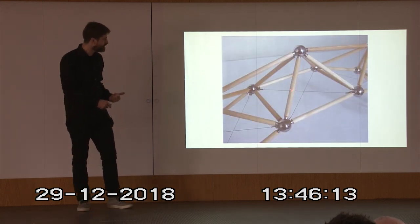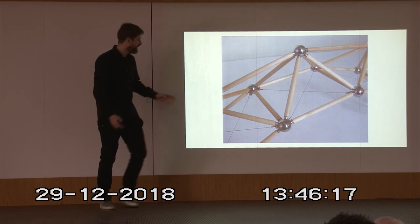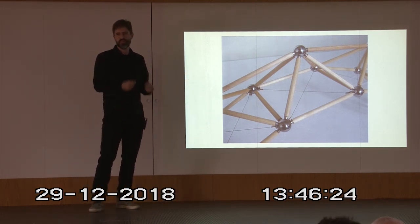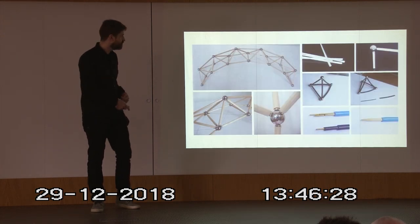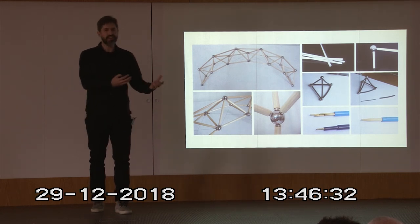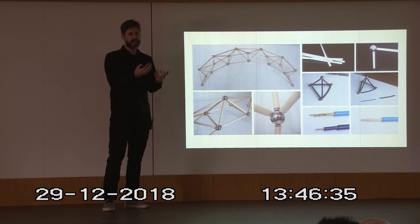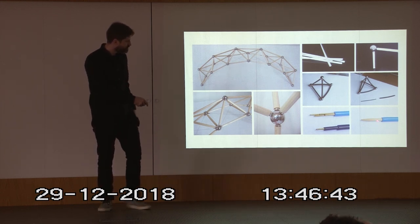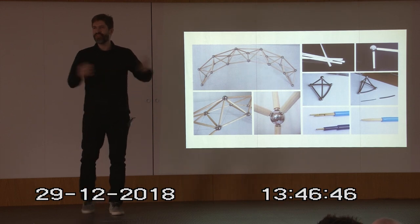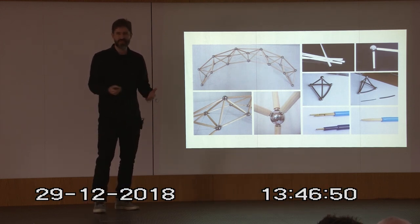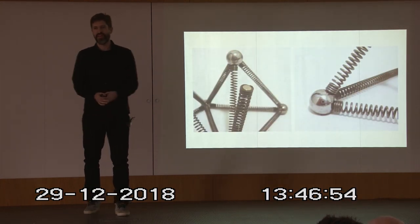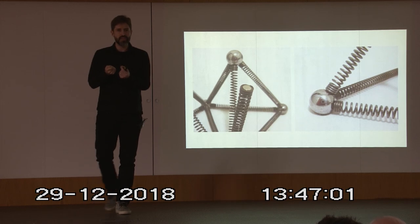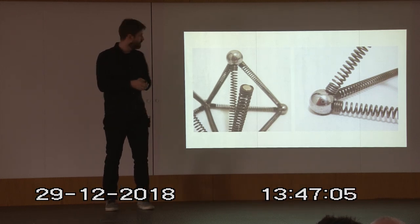I kept curious about the structural behavior — I wanted to see what was happening in each bar of the structure, but with wood sticks I could not see the deformations. So I started to build with different materials trying to find something that would let me visualize everything. I tried plastic tubes, rubber, wires, barbecue wood sticks — everything I had in front of me. Eventually I got to springs, which are the best material because we can apply loads and get big deformations, and when you take the load off, the elements return to their original shape. So it works really well.